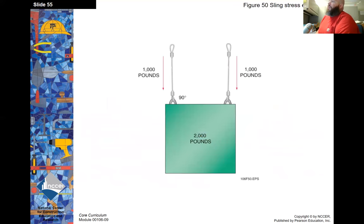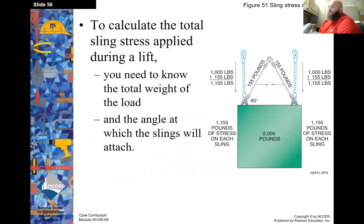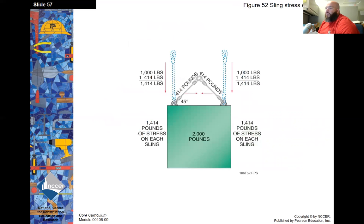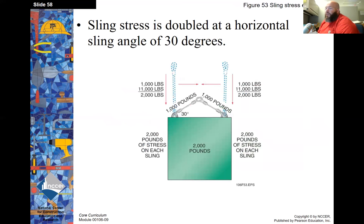Stress example: with a 2,000-pound load, each sling carries 1,000 pounds when straight up and down. As you change the angle, it increases the stress. At 60 degrees, each sling must carry an additional 155 pounds. To calculate total sling stress, you need the total weight of the load and the angle at which slings will be attached. At 45 degrees, there's 414 pounds of additional stress per sling. At 30 degrees, the sling stress is doubled.